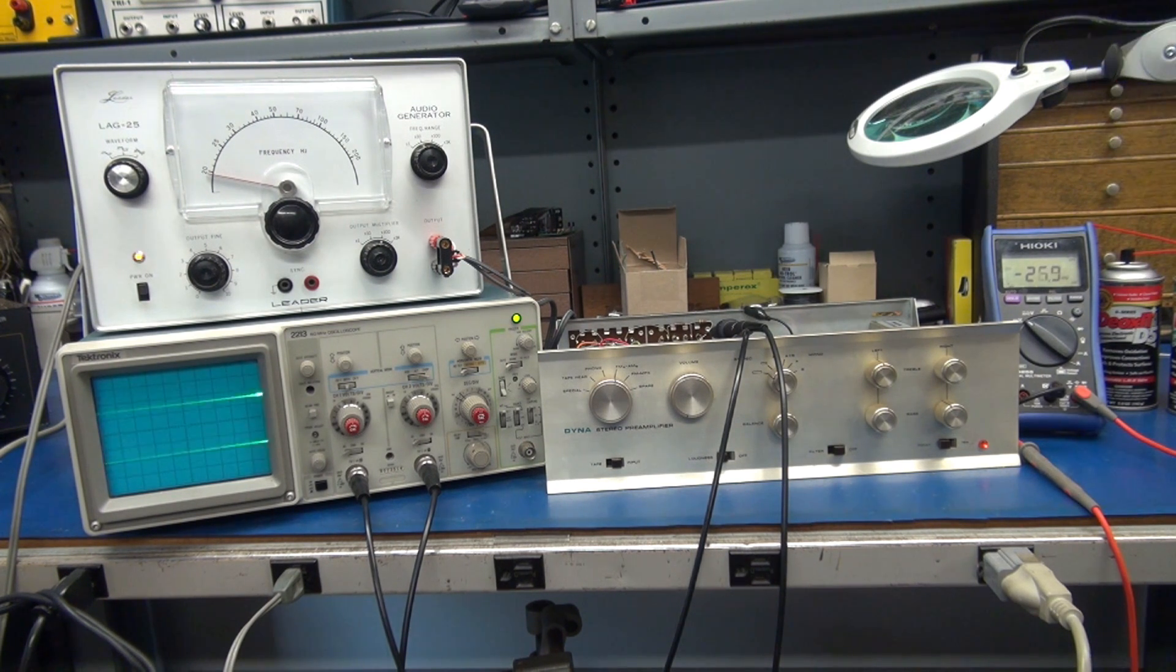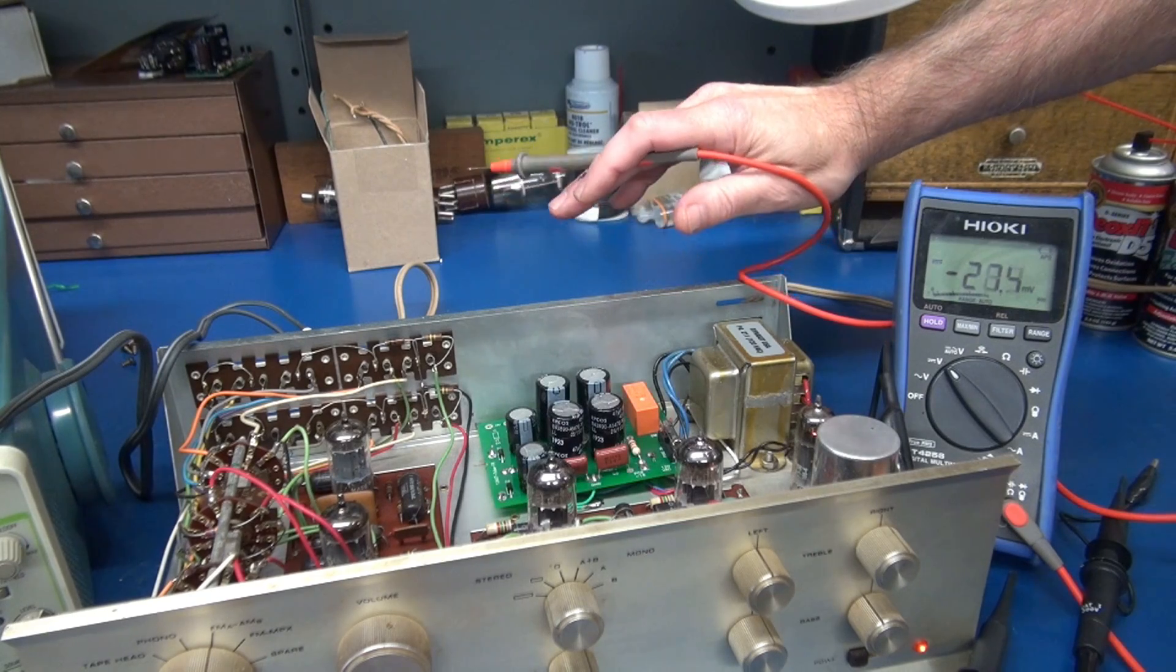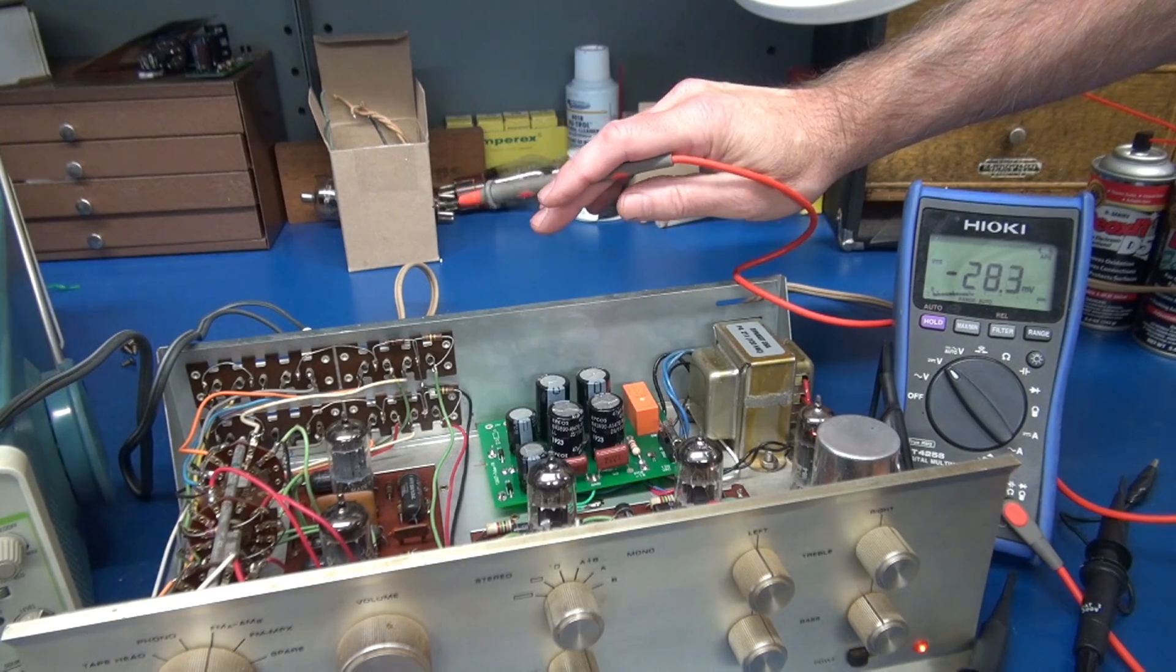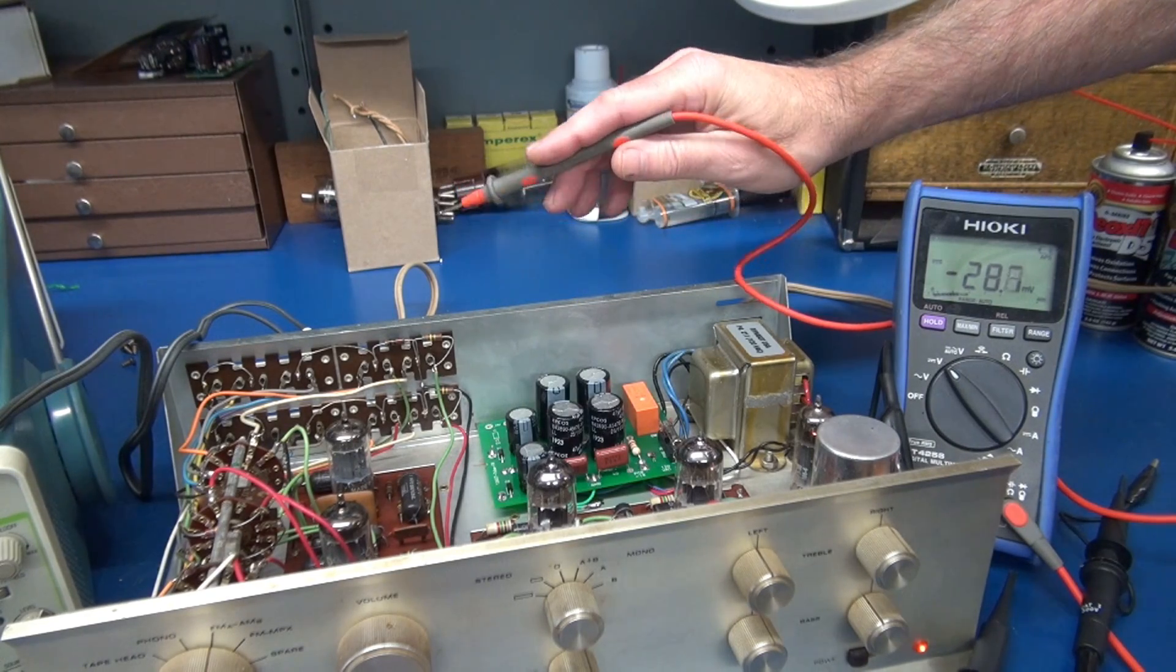Next, we're going to go inside and measure for DC voltages, and then we'll get to the signal test. At this point, you should have your preamp powered up. You're going to observe that the tubes light up, and now we want to check for high voltage.